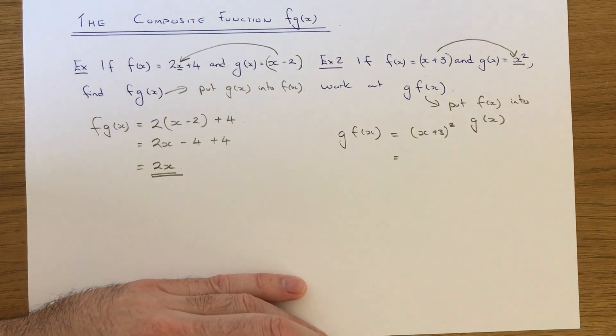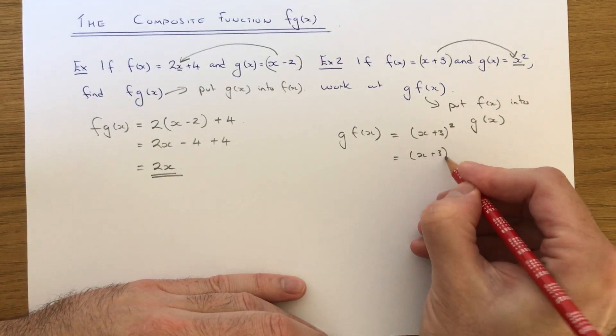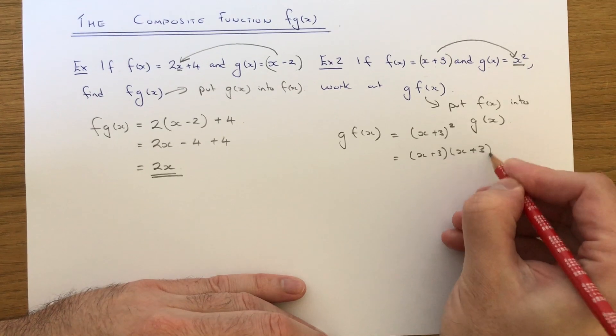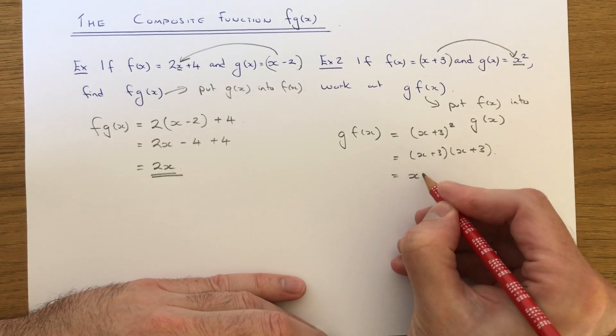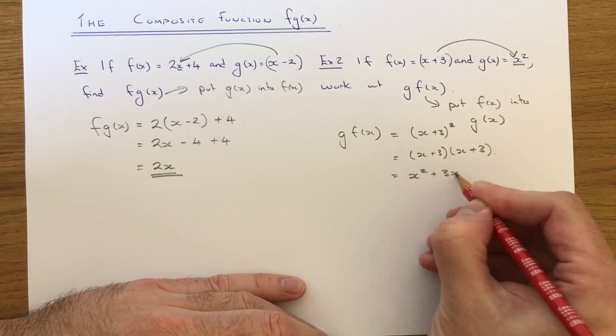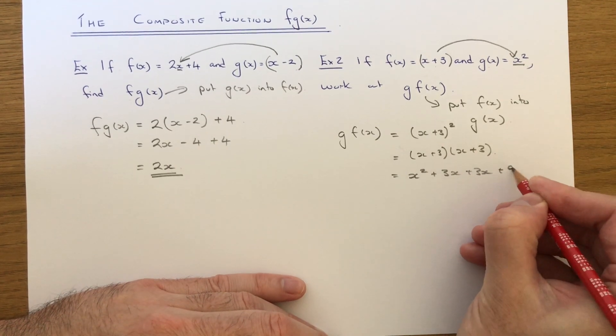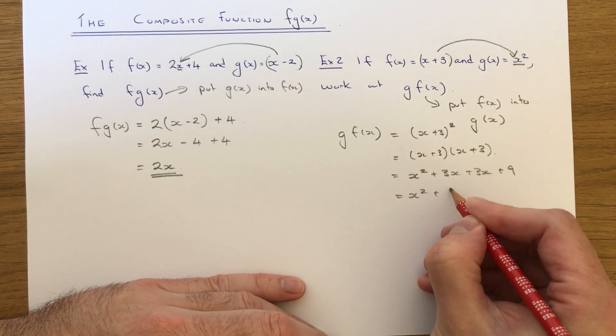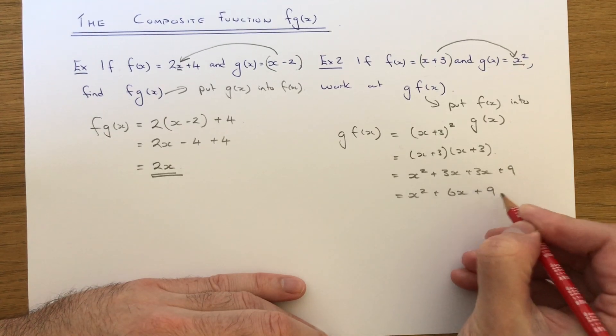Again, if you wish, you can expand these double brackets. So that will give us x squared plus 3x plus 3x plus 9, which is x squared plus 6x plus 9.